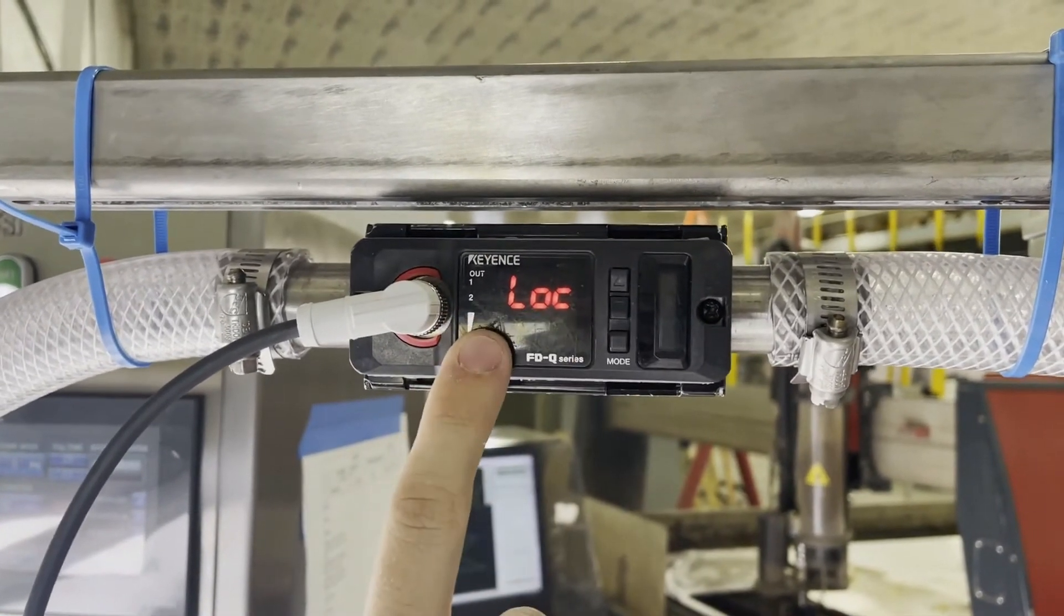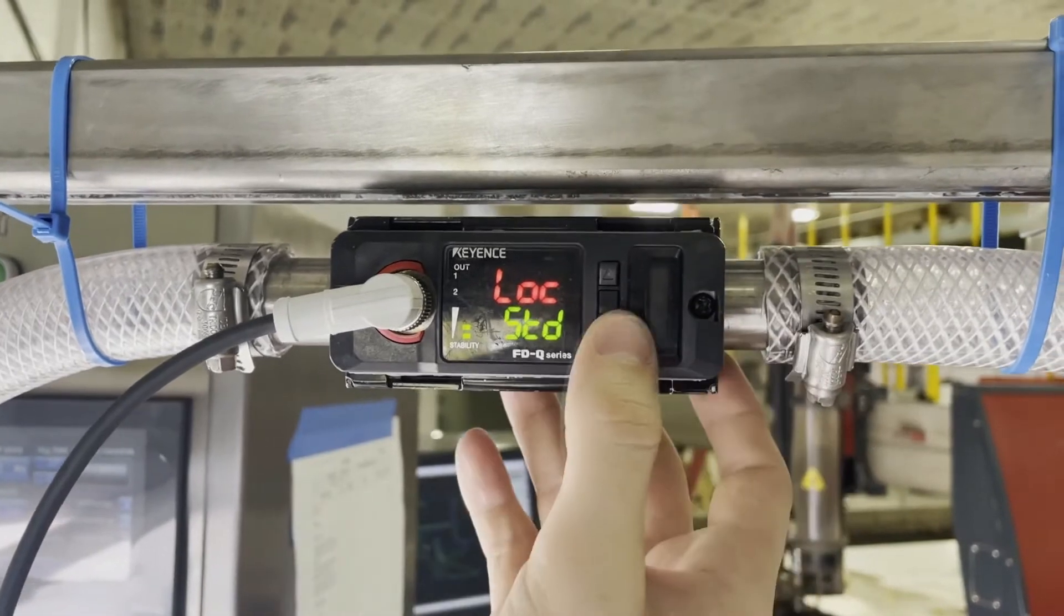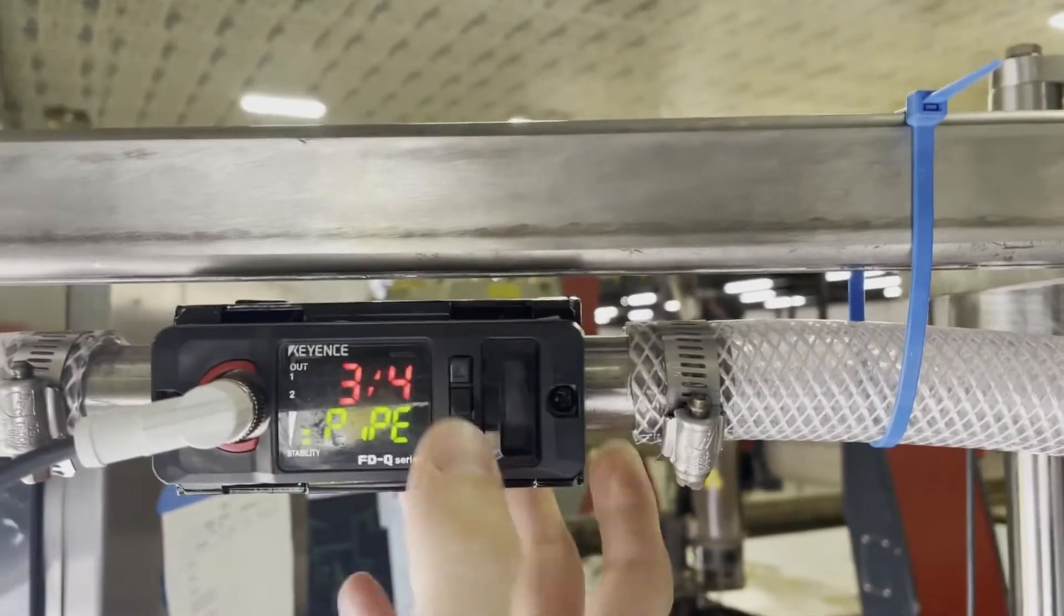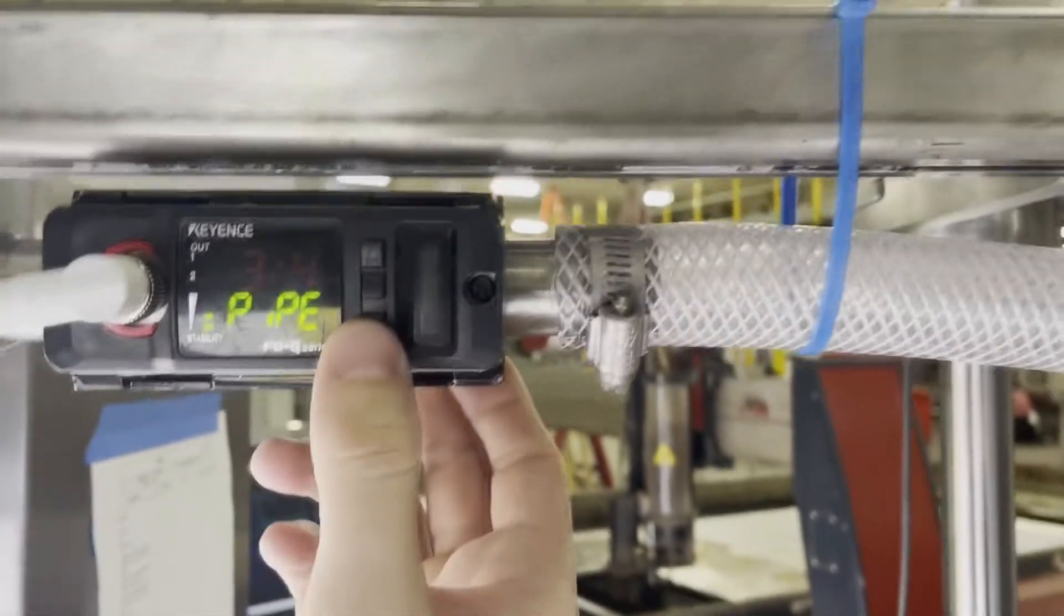Lock. I can create a lock on the sensor as well if I ever want to lock the display or create a passcode to it so that they can't change it. And then again, here's where I choose my direction, the size of the piping.